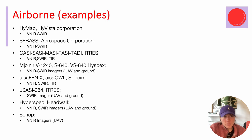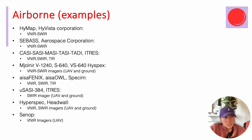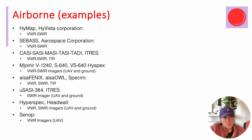We also have a couple of different airborne examples. The main ones to be familiar with include HiMap data from HiVista Corporation, SEBAS from the Aerospace Corporation, CASI, ZASI, and MAZI from ITRES in different wavelength ranges. HiSpecs also provides the Mjolnir instruments usable for airborne, UAV, and ground — as well as classic instruments mountable on an aircraft. Those cover visible-to-near and shortwave infrared as well.